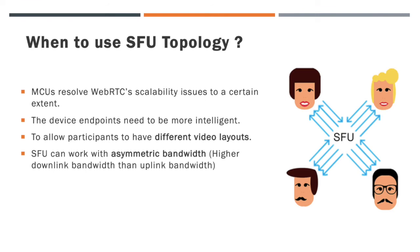Coming to SFU topology, let's look at when we have to use SFU topology in WebRTC. Compared to Mesh and MCU, SFU can accommodate a greater number of participants. The device endpoints need to be more intelligent, and the client has to perform all the encoding and decoding processes. The importance of SFU topology is that it allows participants to have different video layouts based on the client's device. Also, this topology can work with asymmetric bandwidth — for example, higher downlink bandwidth than uplink bandwidth cases — so you can prefer SFU topology.